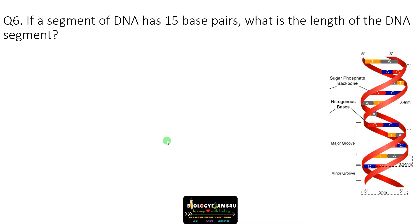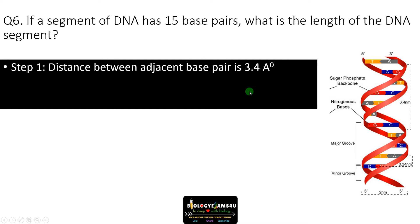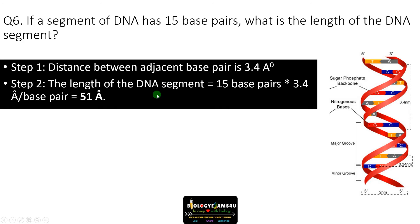Next question: if a segment of DNA has 15 base pairs, what is the length of the DNA segment? We need to know the distance between adjacent base pairs, which is 3.4 angstroms or 0.34 nanometers. So with 15 base pairs: 15 into 3.4 equals 51 angstroms.